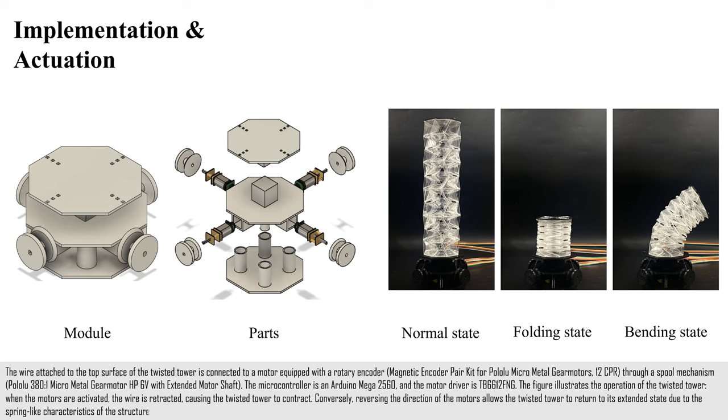The figure illustrates the operation of the twisted tower. When the motors are activated, the wire is retracted, causing the twisted tower to contract. Conversely, reversing the direction of the motors allows the twisted tower to return to its extended state due to the spring-like characteristics of the structure.